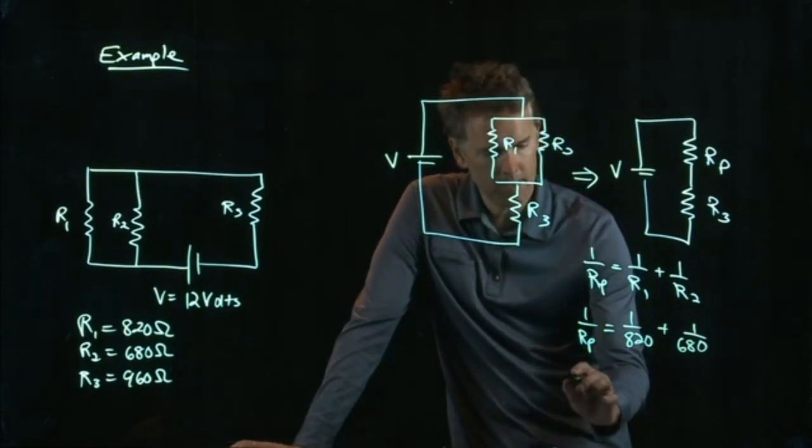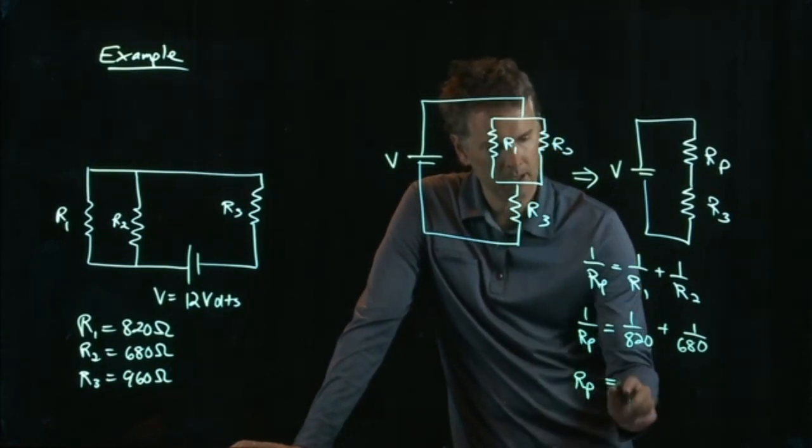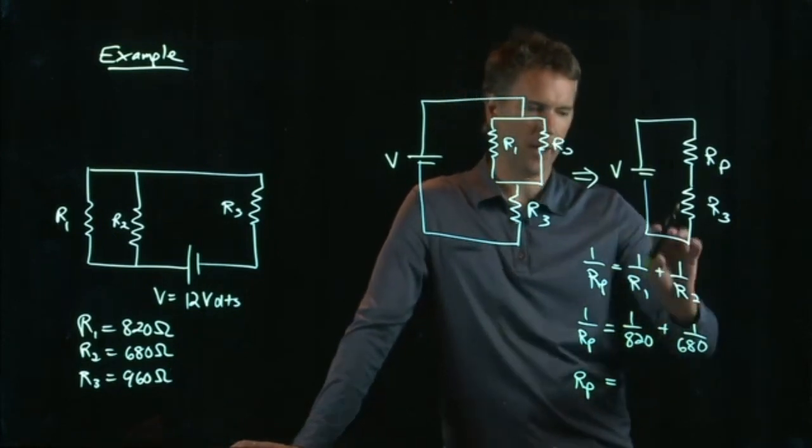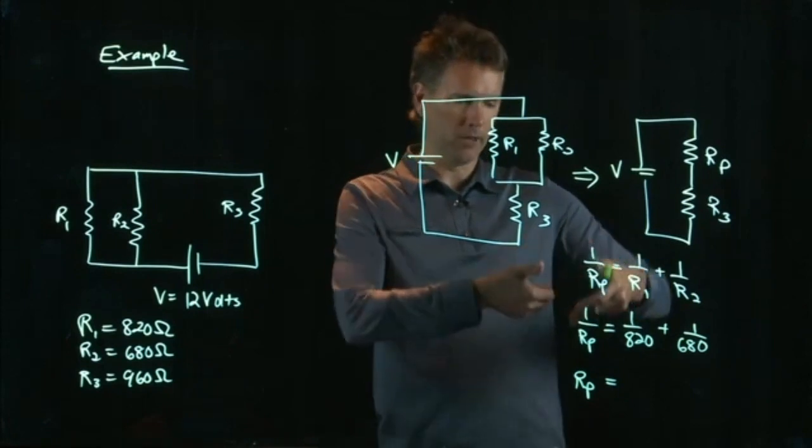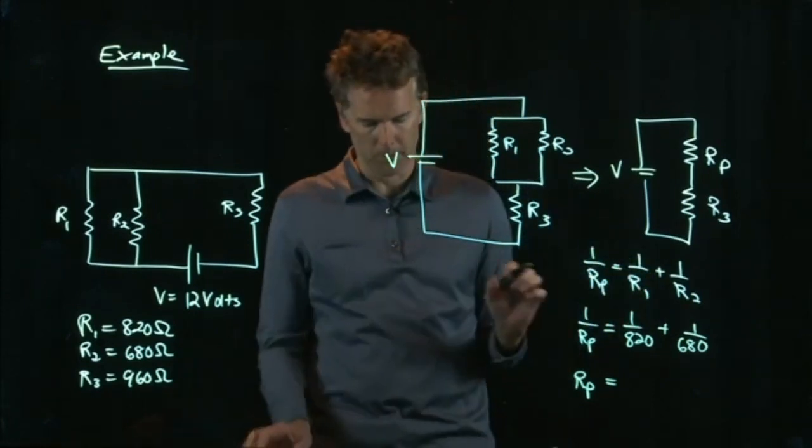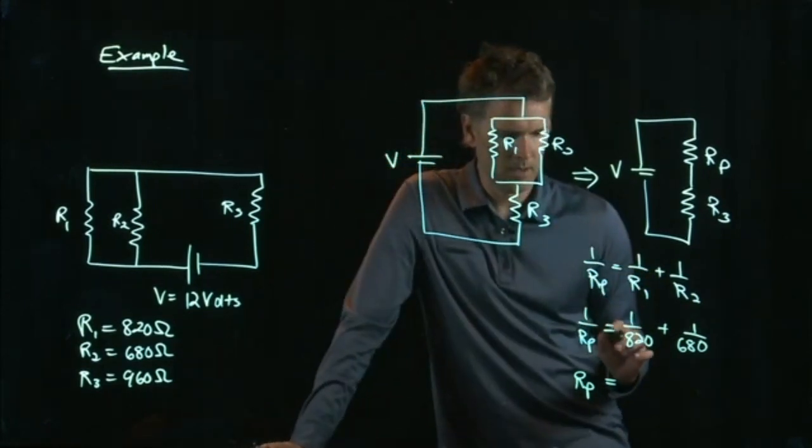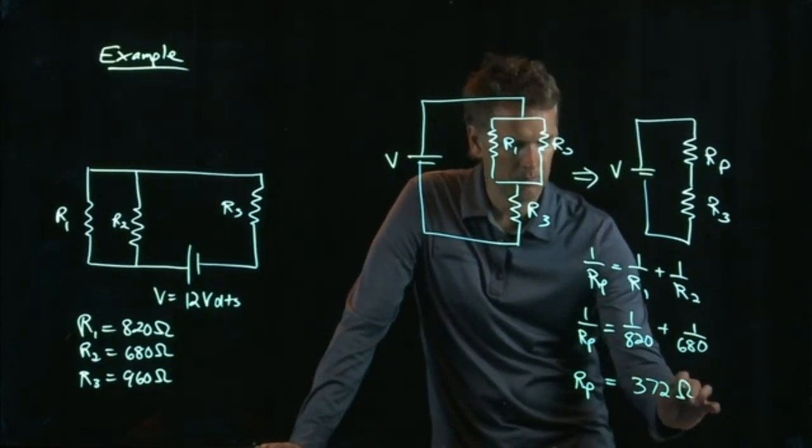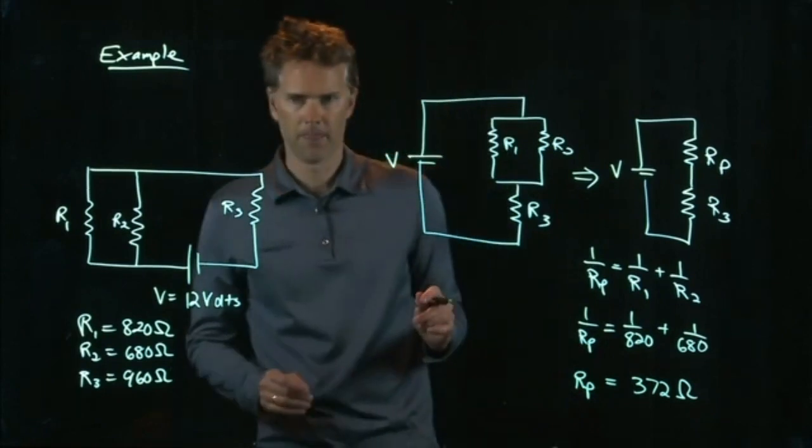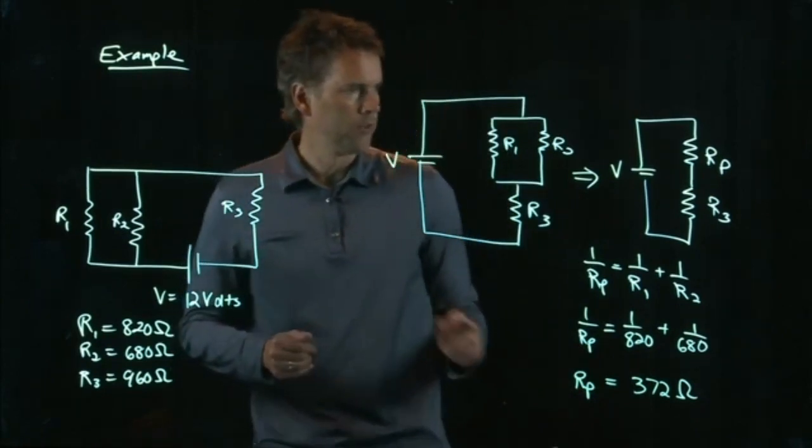And then, take 1 over that number. Okay, after you take 1 over 820, you add 1 over 680, set equals, and then invert it. And that's Rp. And tell me what you get. 372 ohms. Somebody else concur on that one? Okay, good. So, that's Rp.